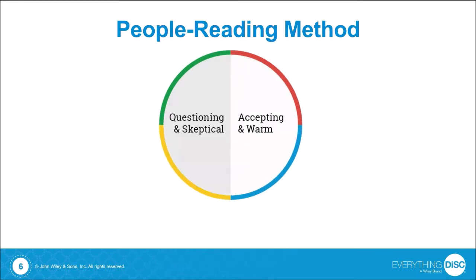Now in step two, consider whether this person is more questioning and skeptical or more accepting and warm. Think about the same person and whether they are more questioning and skeptical or more accepting and warm.